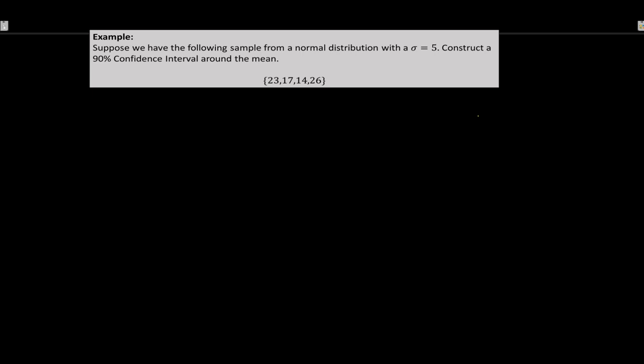Here's our first example. Suppose you have the following sample from a normal distribution with a sigma of five. X is normally distributed and we already know that sigma x equals five. That's a good sign — since we have sigma, we're going to be looking at x-bar. My two options for confidence intervals are either x-bar or p-bar, and x-bar is the only one that needs sigma.